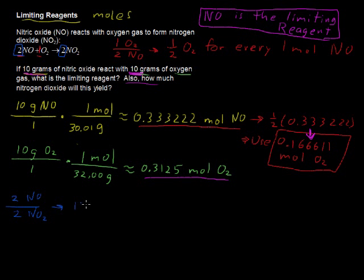In a one-to-one ratio, for every mole of NO that will be reacted, we will yield exactly that number of moles of NO2. So we will get the same number of moles. We will get 0.333222 moles of the NO2.